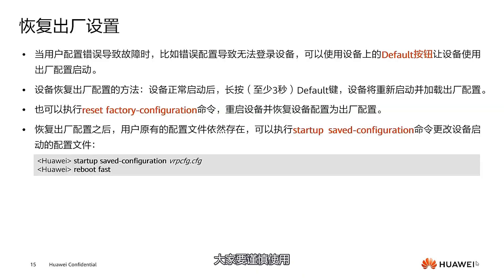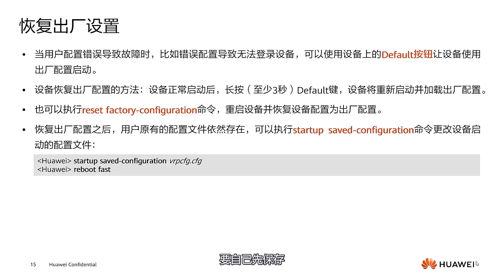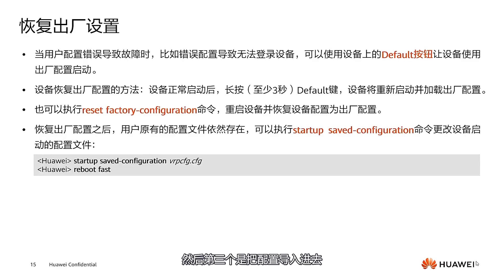In the third part, starting from the failure to come online, we will involve both wired and wireless issues. Both wired and wireless issues can prevent terminals from coming online. Let's briefly look at what troubleshooting processes we have when terminals cannot come online.